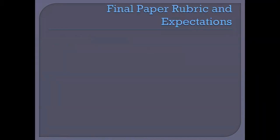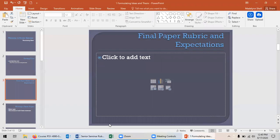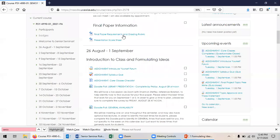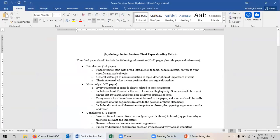The next thing I wanted to go through was the final paper rubric and expectations. This document you can find on Moodle in the general section under final paper requirements and grading rubric.